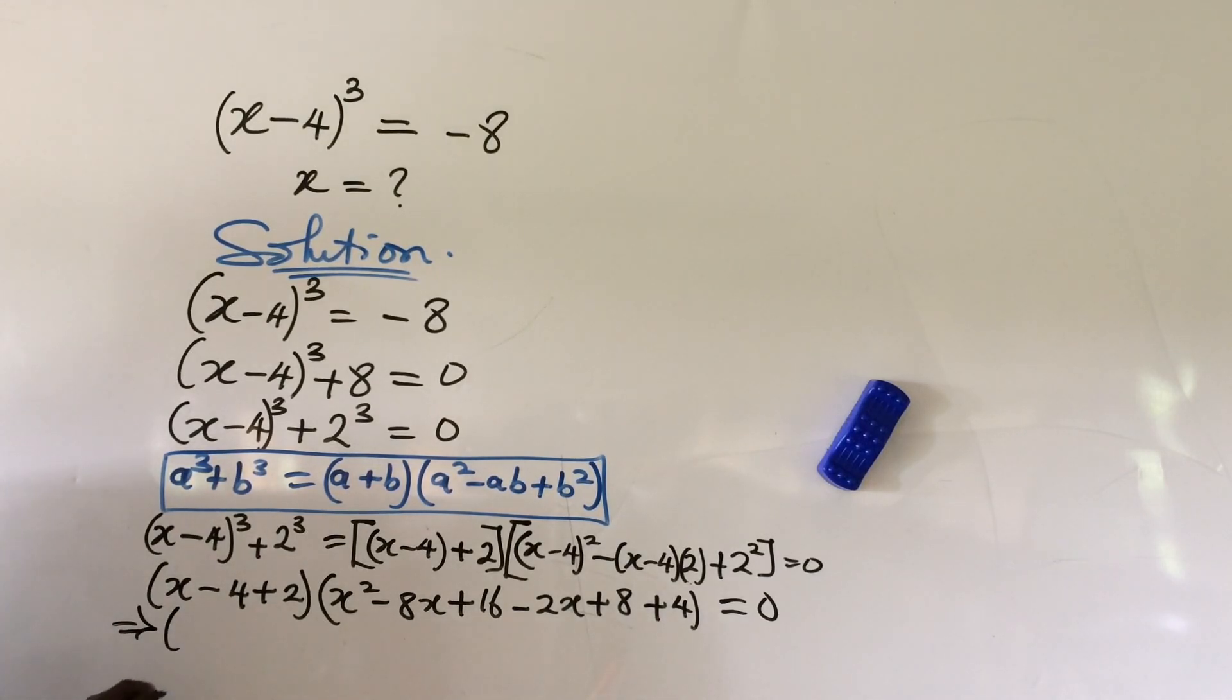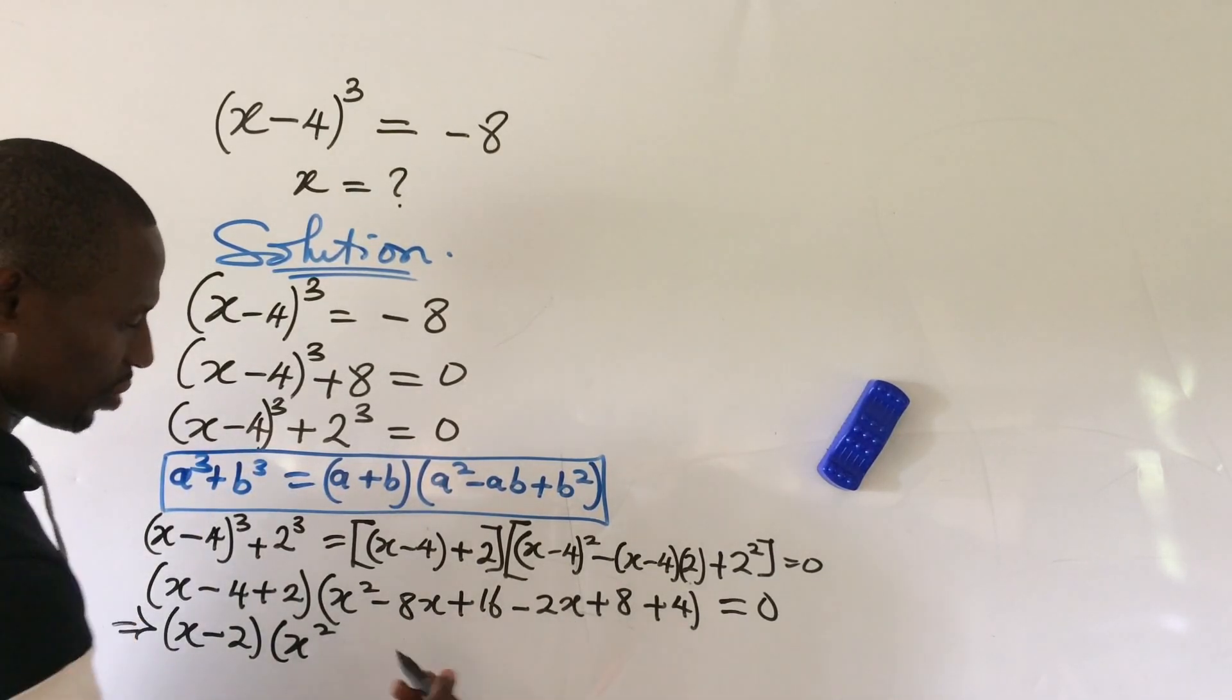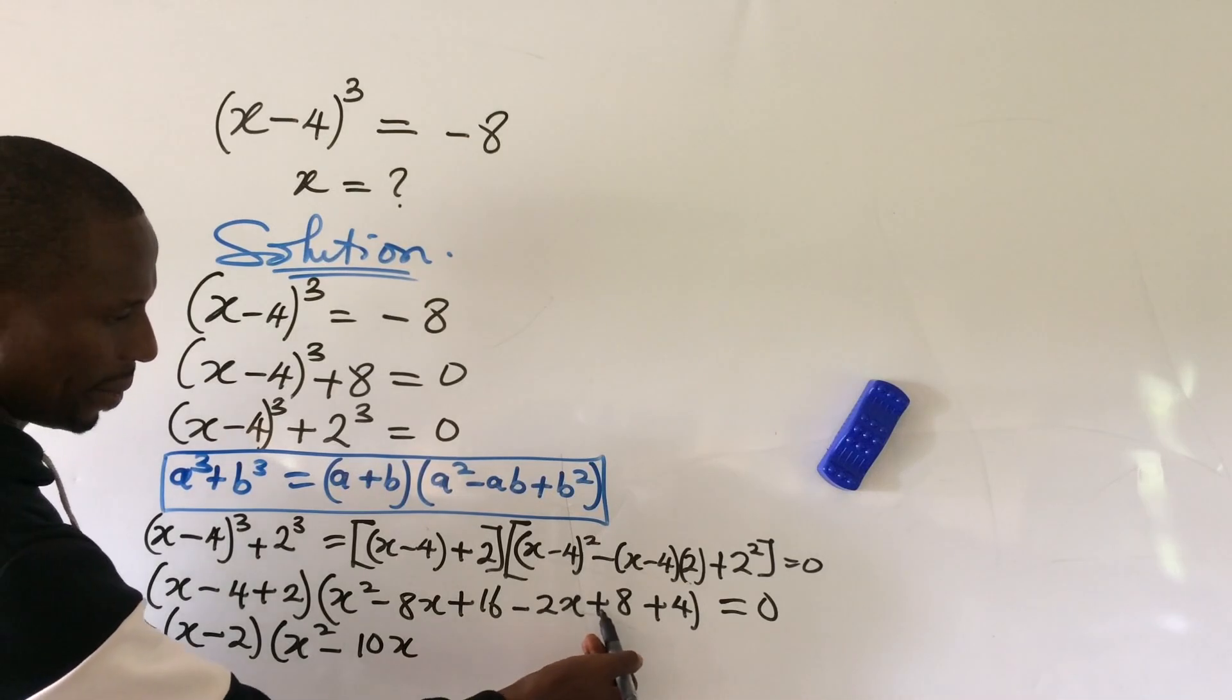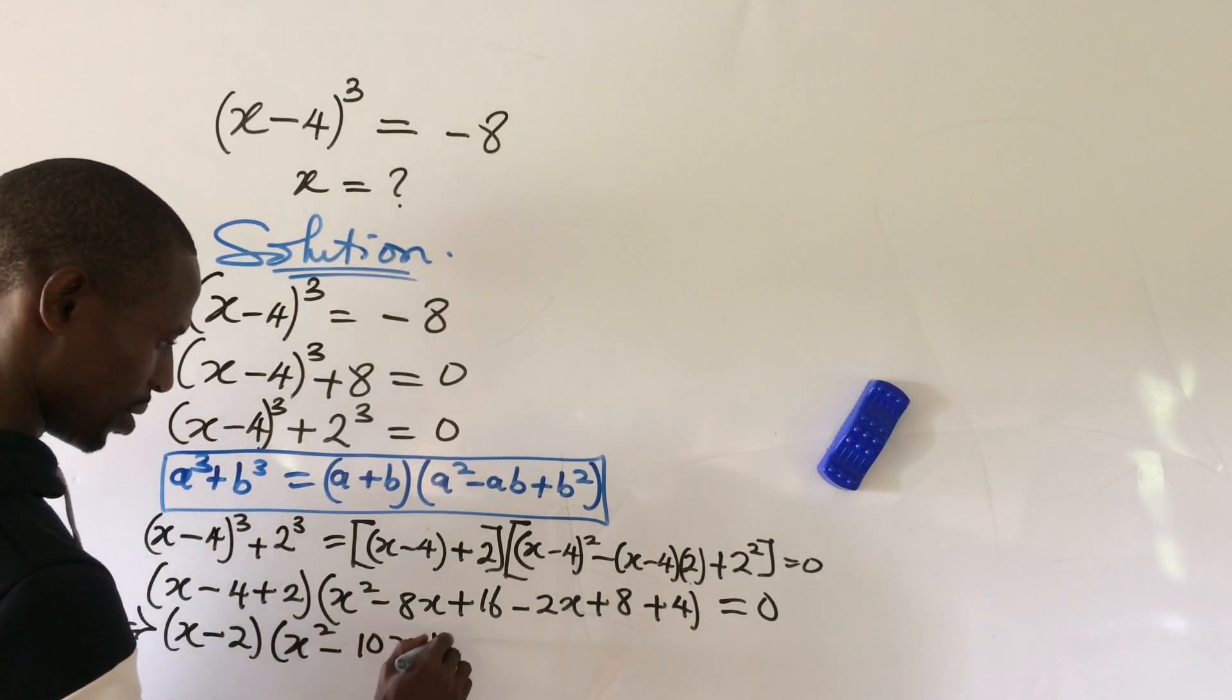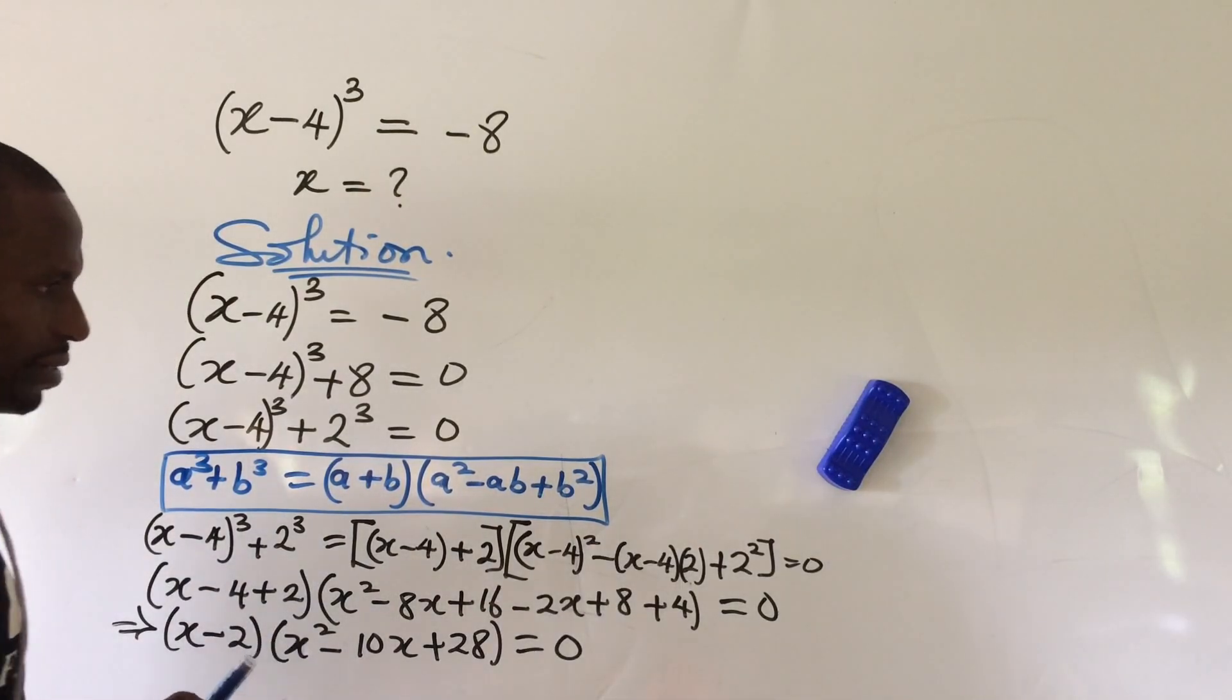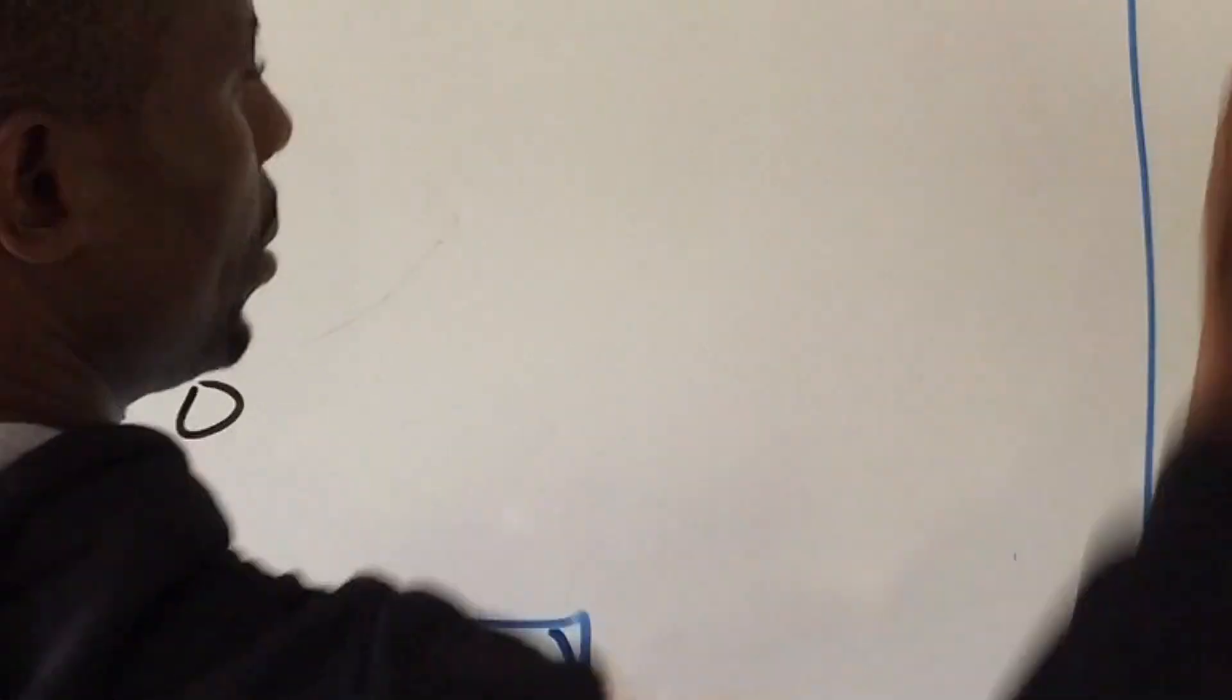So this now implies (x-4+2) will give us (x-2), then we have x² - 8x - 2x will give us -10x, then 16 + 8 + 4 will give us +28. So we have here x² - 10x + 28. Everything equal to 0. So let's proceed on this other side of the board.